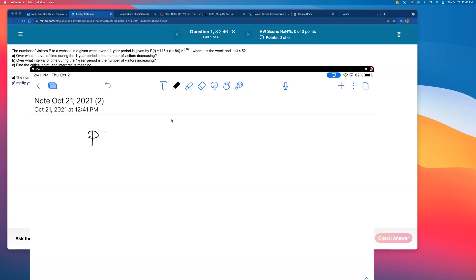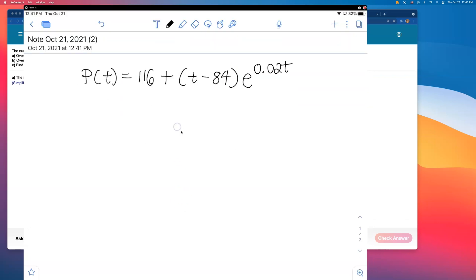Okay, so the function is P(t) equals 116 plus (t minus 84) times e to the 0.02t. I'm going to find the derivative of this, set it equal to zero and find some critical values. It's not the prettiest function but we'll try. So what's the derivative? Okay, 116 is just constant, that's gone, that's going to give us zero. I see a product. Do you see a product? I see this t minus 84 times e to the 0.02t power. So I'm going to do a product rule.